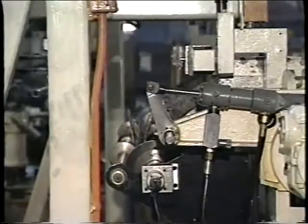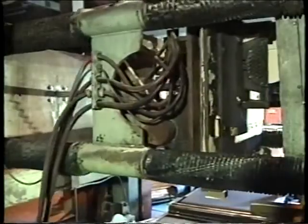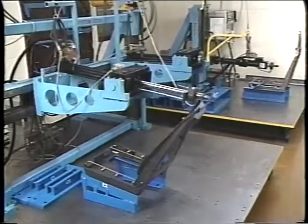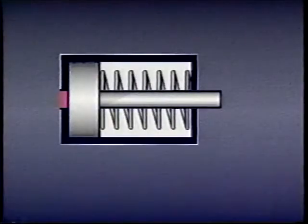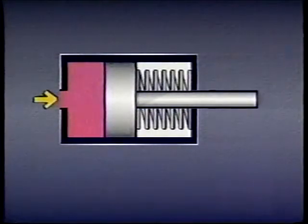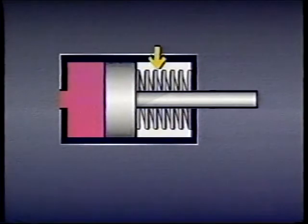There are several different kinds of cylinders used in industrial hydraulics depending upon the specific application. One common type is the single-rod single-acting cylinder, which has fluid pressure applied to only one side of the piston. The return stroke is accomplished by some external means such as gravity or a spring.